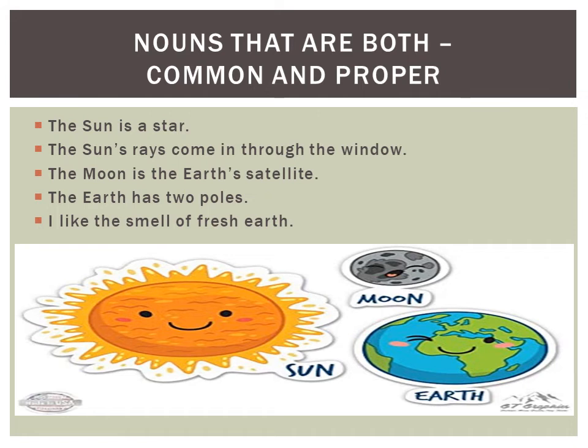Thus, we write Sun, Moon and Earth beginning with capital letters only when we are talking about the star, satellite and planet respectively. Whereas these are used as common nouns when they are being referred to in general, and not as the planet, star or satellite.